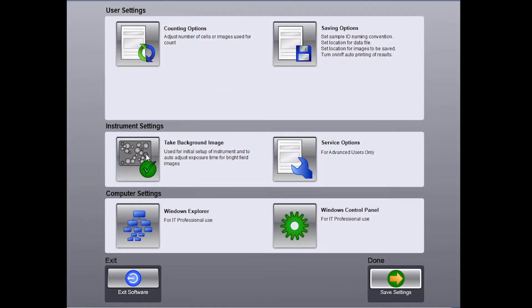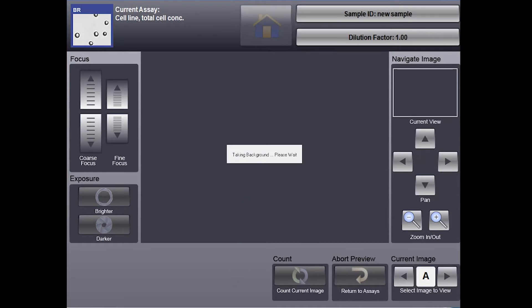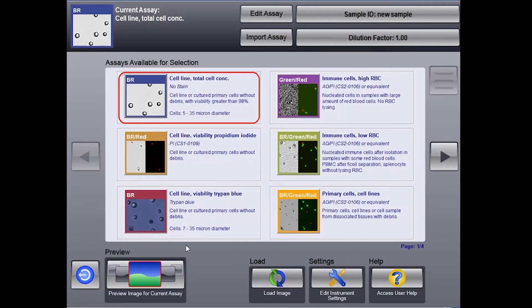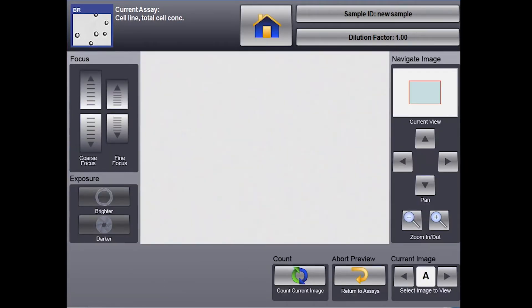In order to start analyzing any samples, you will need to take a background image first. It is also recommended to retake the image anytime you relocate the instrument. Once you have completed taking the background image, preview it by clicking on preview current image. This preview image should be a bright white background.